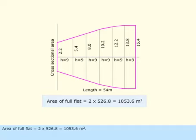Area of full-flat equals 2 multiplied by 526.8 equals 1053.6 meters squared.